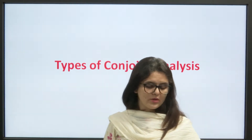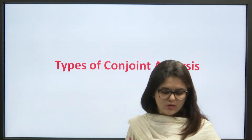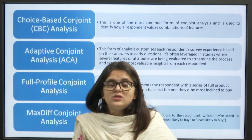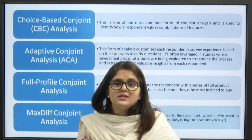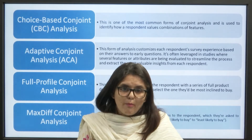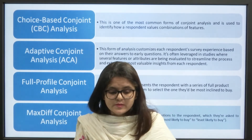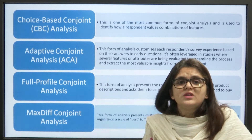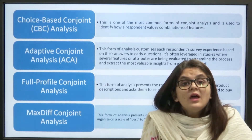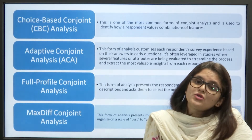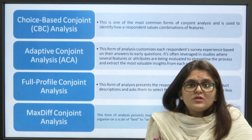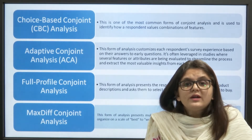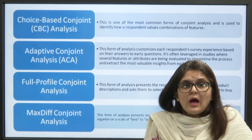Now understanding the types of conjoint analysis. There are different types: choice-based conjoint analysis is one of the most common forms and is basically used to identify how respondents value different combinations of product features — what various combinations are available with the product and how consumers respond to them.